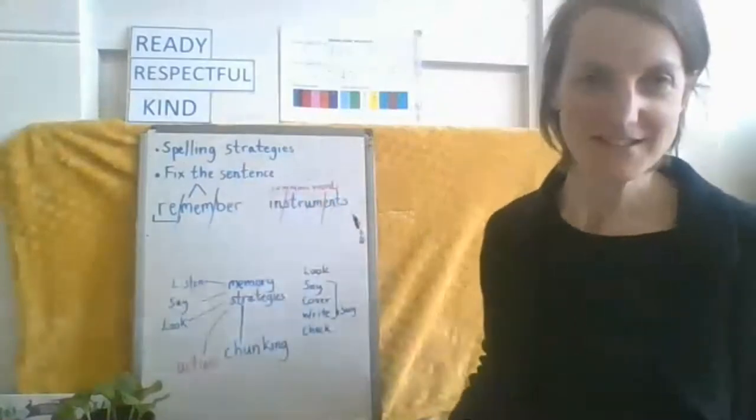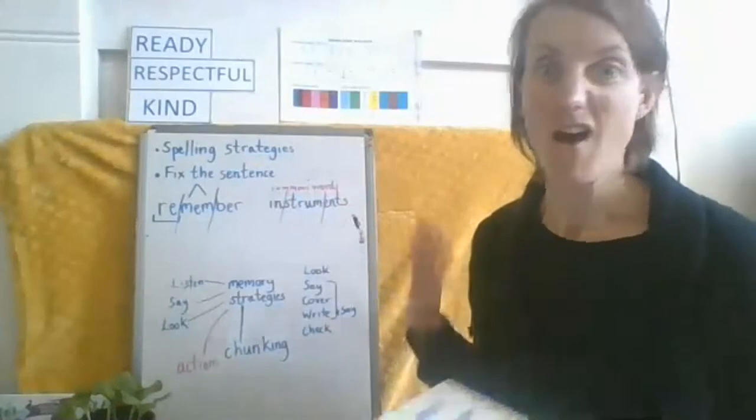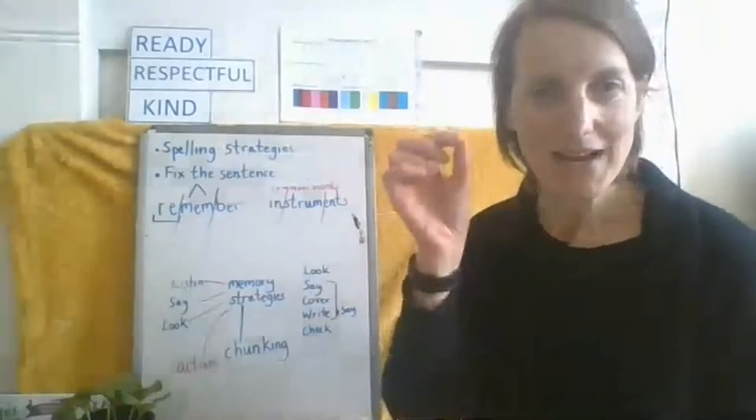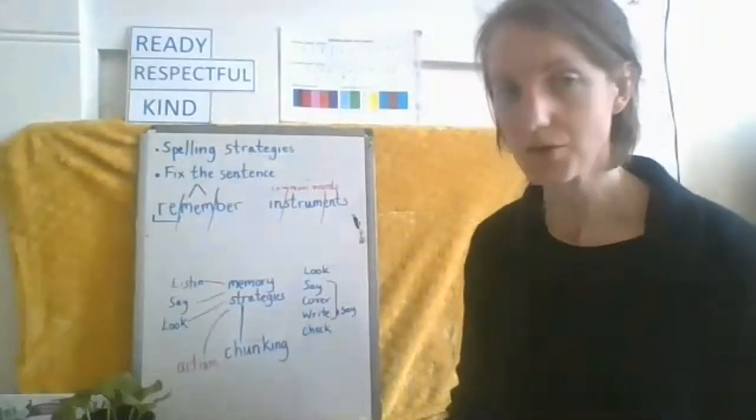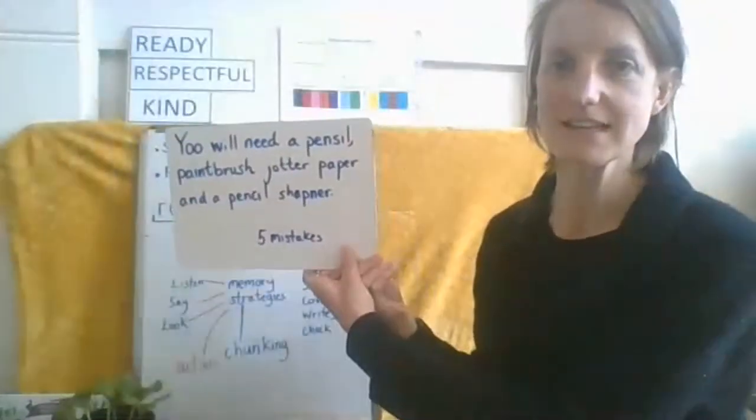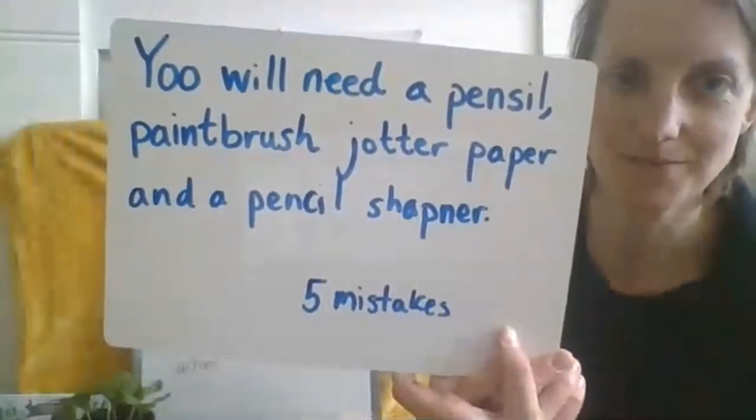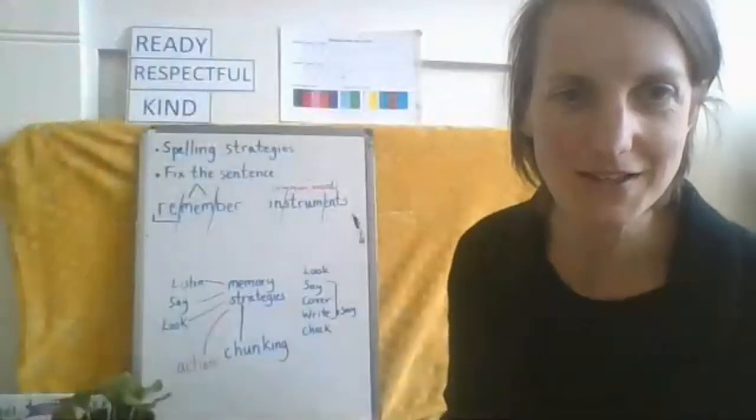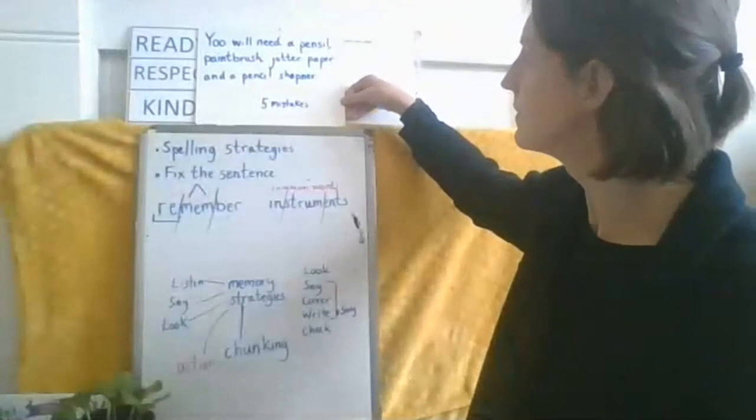We're going to play fix the sentence. So I've given you some sentences that aren't quite right instead of our dictations this week. And you are brilliant at looking at the sentence and finding little mistakes. So the first sentence is this one. Now this sentence has in it five mistakes. Can you see them? I bet you did that so quickly because you're so clever. And you've done this before. So here we go.